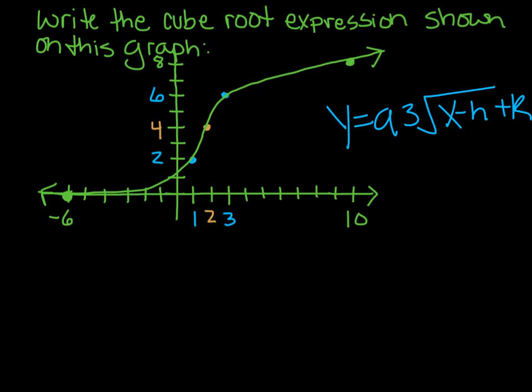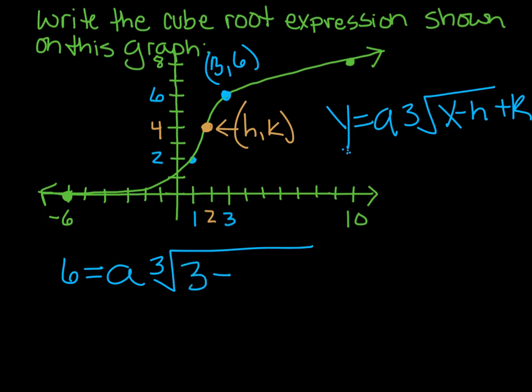All right, so now I'm going to go with my inflection point. That's always going to be your h, k. Okay, and then you can pick another point, any other point that you want. I'm going to go with this one at 3, 6. And I'm going to plug them in. So my y is 6, don't know a, cube root x is 3, h is 2, and then plus k. Remember that's afterwards, so plus 4. And I'm going to have 6 equals 3 minus 2 is 1. Cube root of 1 is 1. So a plus 4. 6 minus 4 is 2. So we're going to solve for a.